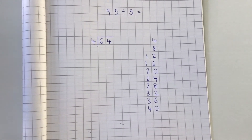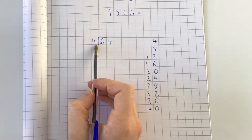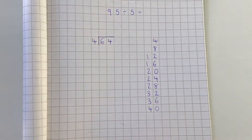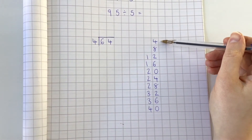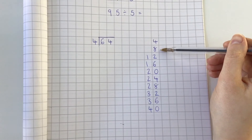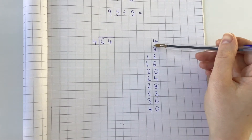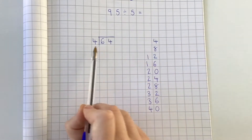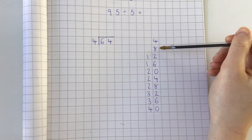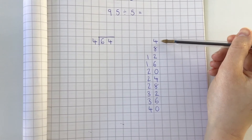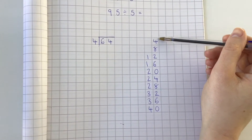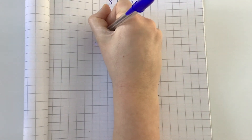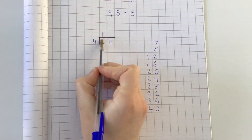Our first division: 6 divided by 4 — how many times does 4 go into 6? Let's count: one, two. It can't go in two times because 8 is bigger than 6, so we need to go back. 4 goes into 6 once, so I can write the number 1 above the 6.